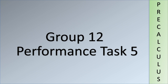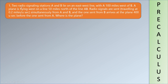Good afternoon, Sir Robin. We're going to look at the performance task 5 of group 10. For our first question: two regional signaling stations A and B lie on an east-west line, with A 100 miles west of B. A plane is flying west on a line 50 miles north of line AB. The signals are sent traveling at 0.2 miles per second simultaneously from A and B, and the one sent from B arrives at the plane 400 seconds before the one sent from A. Where is the plane?